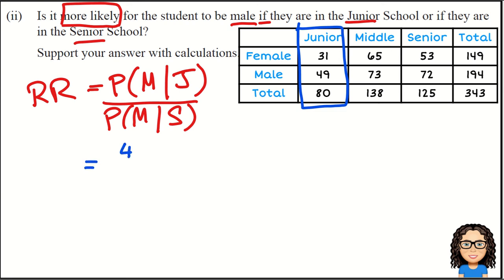Then I need to find the probability of being male given senior. Now I'm going to look at the senior school, and you can see we've got 125 senior students of whom 72 are male. So that is my probability on the bottom here, 72 out of 125.